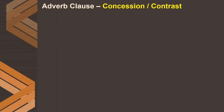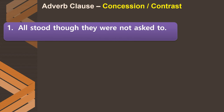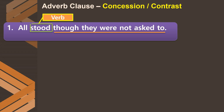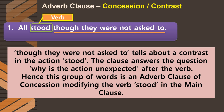Examples of adverb clauses of reason: 'I sing as it is my passion'; 'Since you did me a favor, I will help you'; 'The police rushed because the thief escaped' — 'because' gives the reason for the action. The sixth type is the adverb clause of concession or contrast. In 'All stood though they were not asked to,' there is a contrast: they stood, but they were not asked to. Keywords: 'though,' 'although.' The clause answers why the action is unexpected after the verb.